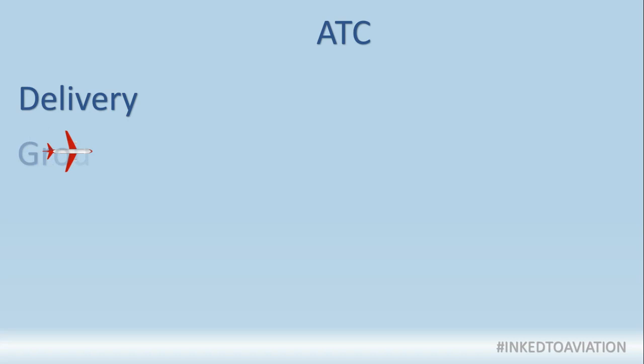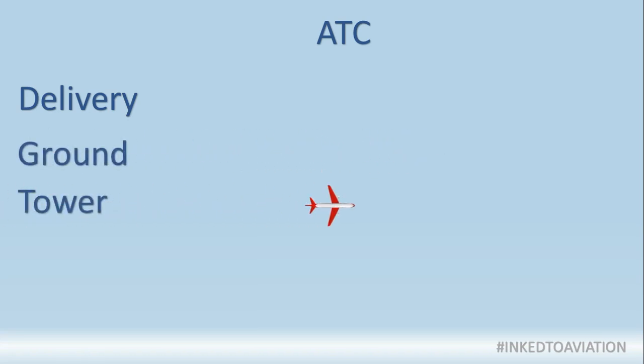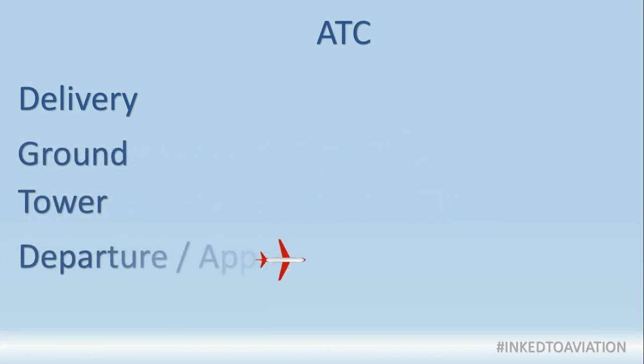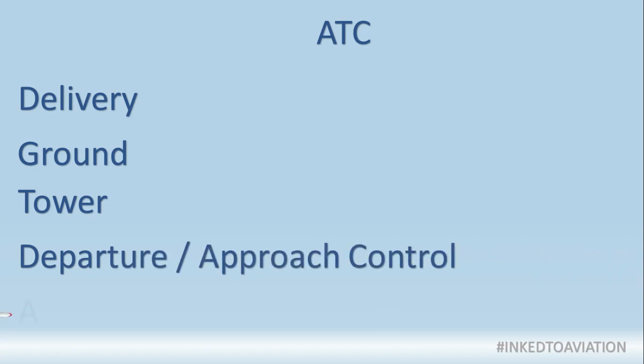There are five levels of ATC — they could be less or they could be more. The five levels are: first, delivery; second, ground; third, tower; fourth, departure or approach control depending on the phase of flight; and fifth, area control. So these are the basic five levels of ATC. Let's take an example to understand these levels better.